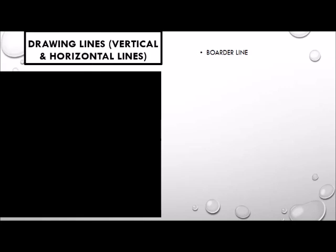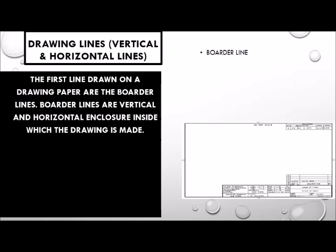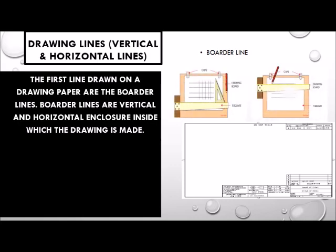Drawing lines — that is, vertical and horizontal lines. The first lines drawn on a drawing paper are the border lines. Border lines are vertical and horizontal enclosures inside which the drawing is made. Border lines are 1 cm from the edge of the paper. The vertical lines are drawn with a T-square, while the horizontal lines are drawn by using the T-square as a base for the set square to produce vertical lines.